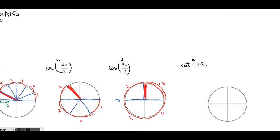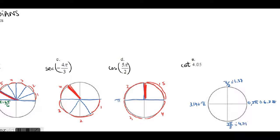This angle of 4.05 is still in radian mode because it has no degree symbol, but it has no π either. To place it, use decimal approximations: π ≈ 3.14, 2π ≈ 6.28, π/2 ≈ 1.57, and 3π/2 ≈ 4.71. Since 4.05 is close to 4.71, it's a rotation of almost 270°, somewhere just before 3π/2 — so you eyeball it and draw it there.